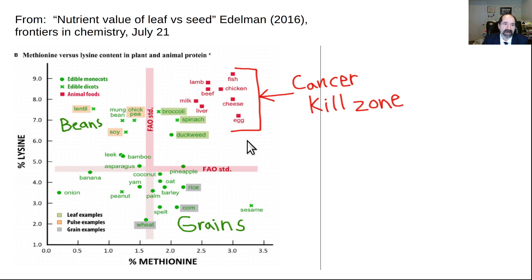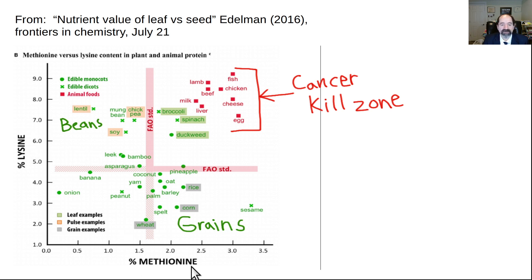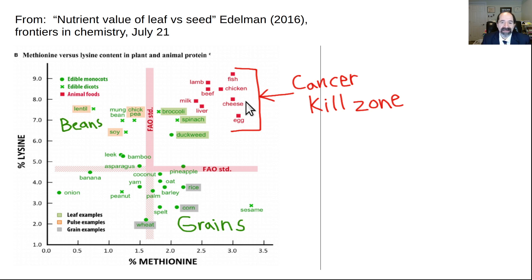Here is one of the coolest slides, from the paper 'Nutrient Value of Leaf Versus Seed' by Edelman, 2016. This graph shows the amount of lysine and methionine as a percentage of calories in protein from different foods. The worst of both worlds is animal foods — all the items in red are animal foods — and I call this the cancer kill zone: high in methionine and high in lysine. That seems to be the perfect blend to accelerate cancer growth, and that's where all your animal foods are.